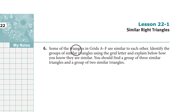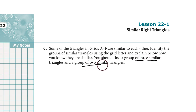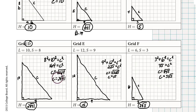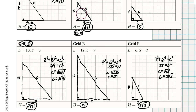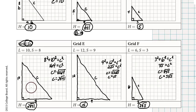Look at question 6. Some of the triangles are similar to each other. Identify the groups of similar triangles using their grid letter. We should find a group that has 3 similar triangles and a group of 2 similar triangles. The group that has just 2 similar triangles are grid D and grid B. The numbers in grid D are all 2 times larger than the sides in grid B, so the scale factor connecting grids B and D is 2.